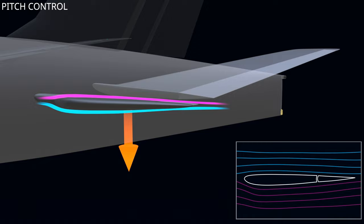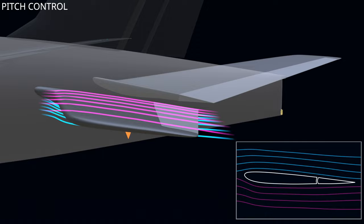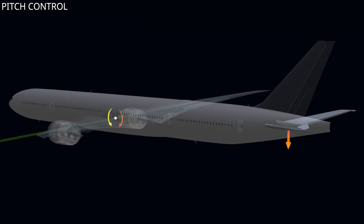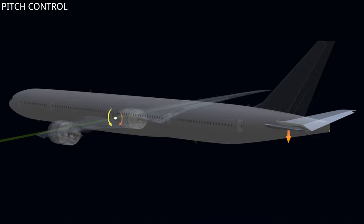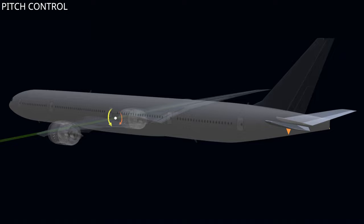Moving the horizontal stabilizer changes the angle of incidence and varies the airflow turn around the tailplane. When the leading edge of the stabilizer moves down, the tail-down force increases. When the leading edge moves up, the tail-down force decreases. Elevator up deflection will increase the nose-up pitching moment and cause the aircraft to pitch up. Horizontal stabilizer down movement will increase the nose-up pitching moment and pitch the aircraft up, while stabilizer up movement will reduce it and pitch the aircraft down.